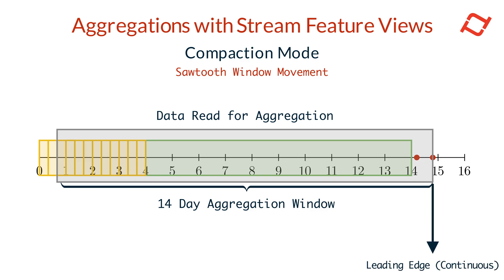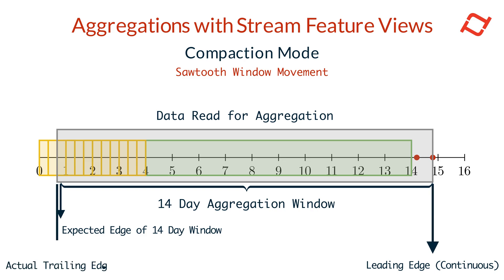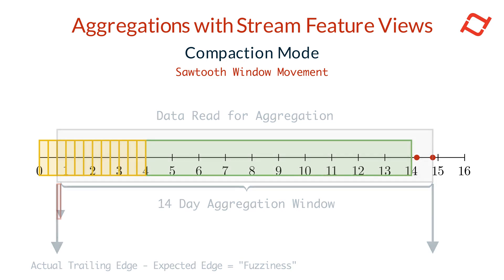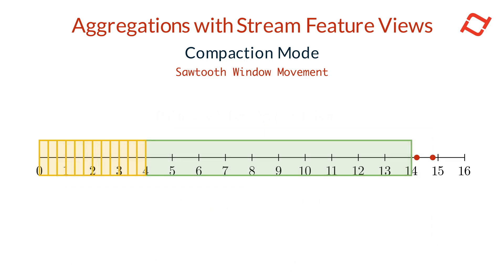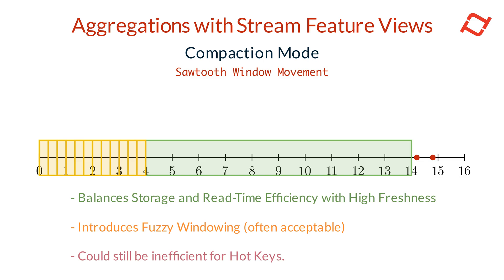The leading edge of the window is continuously updated with real-time events and is always the same as the query time. While we would like the trailing edge to also slide continuously for an exact 14-day window, the trailing edge hops at fixed intervals due to the sawtooth tiles. The exact boundaries of the aggregation window can therefore vary slightly with each query — this variance is referred to as fuzziness. The size of the sawtooth tiles is determined based on the overall window size, with Tekton ensuring that the fuzziness remains below 10% of the window size.